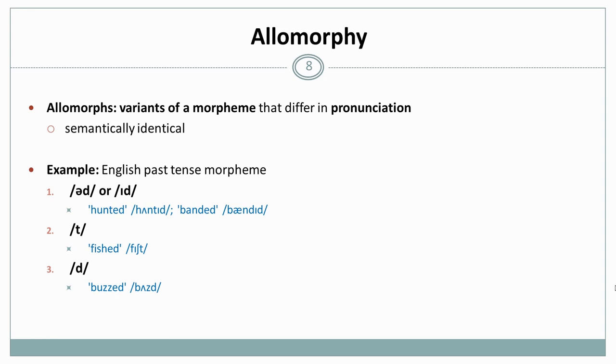The /ət/ or /ɪd/, depending on your dialect, occurs when the verb stem ends with a t or a d, so for example, hunted, banded. The /t/ occurs when the verb stem ends with a voiceless phoneme other than t, so for example, sh as in fished. And then we have the /d/, which occurs when the verb stem ends with a voiced phoneme other than d. So for example, the z as in buzz gives us buzzed.